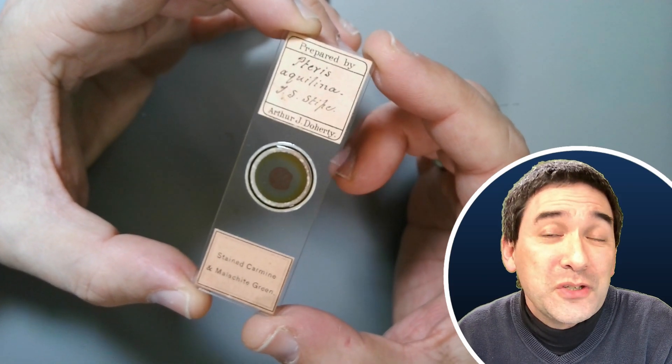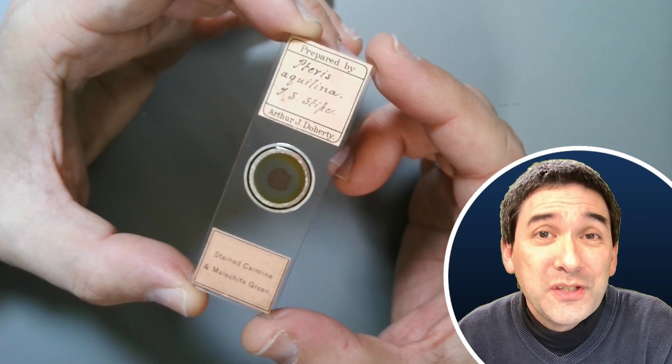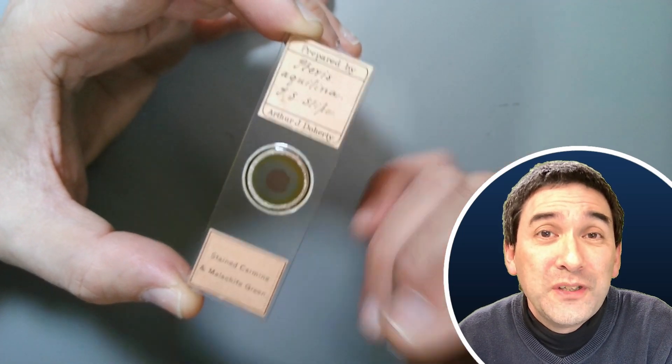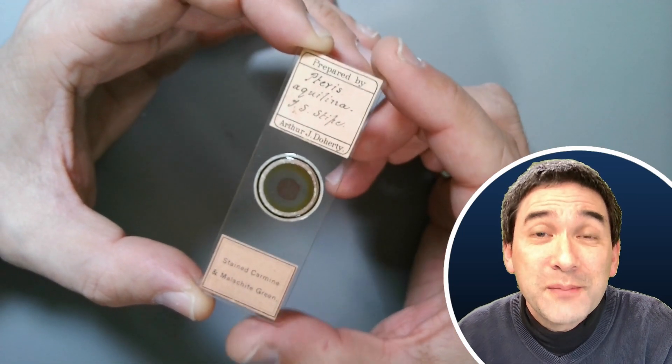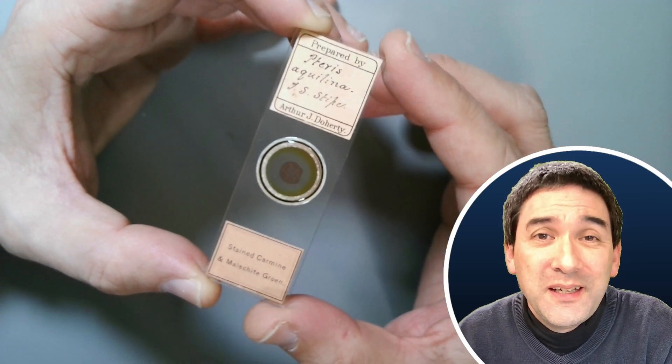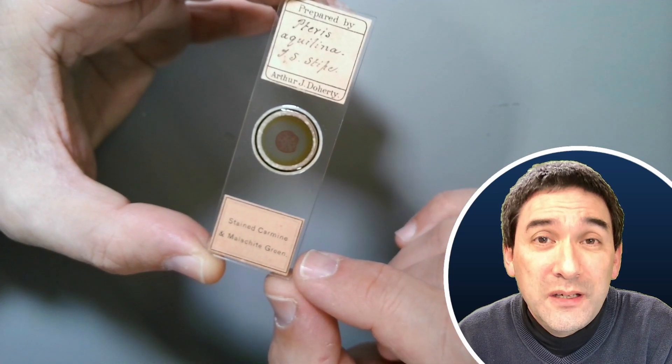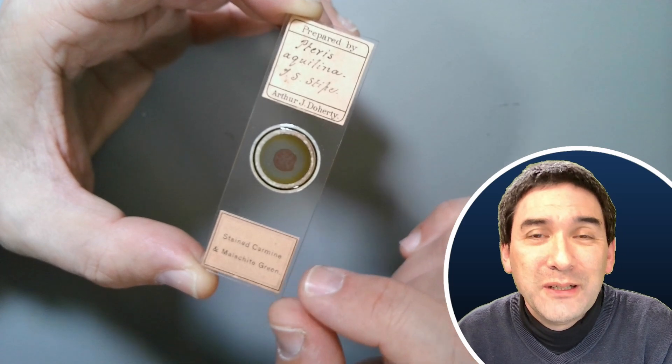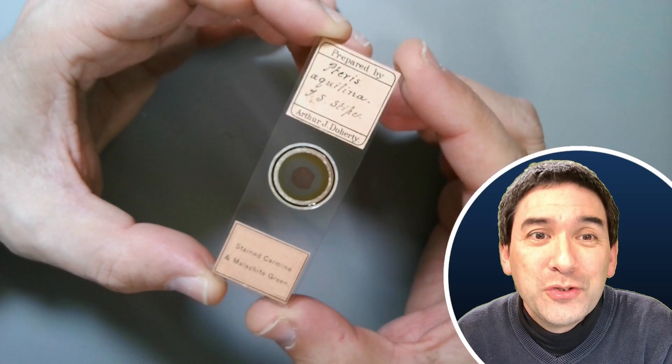And this slide in particular is quite pretty because of the so-called vascular tissue of the fern. These are the tissues of the cells that transport substances up and down the plant and look quite nice. The specimen was stained with carmine, that is a red pigment, and also malachite green. So we even have a little bit of information here about the preparation technique.